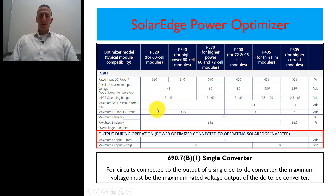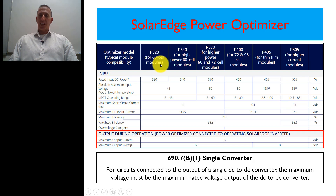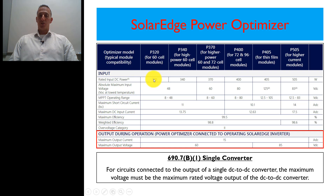You can see that information right down here. For example, the rated input DC power of this module would be 320, which matches up with the P320, and this is for a 60-cell module — just a standard module. The further we go to the right, the higher the power ratings of the module. So this P320 can handle any module wattage-wise up to 320 watts. You also want to make sure you understand the input voltages, because you sync all of that up. The higher you go, the higher the wattage and typically the voltage as well.